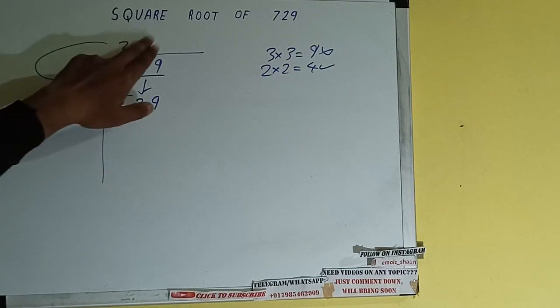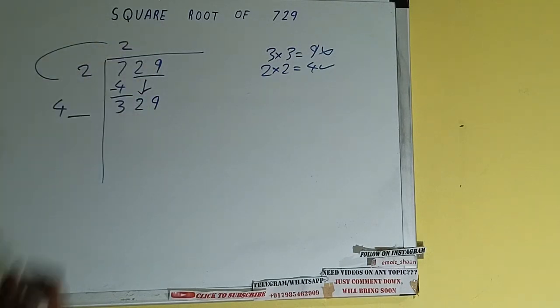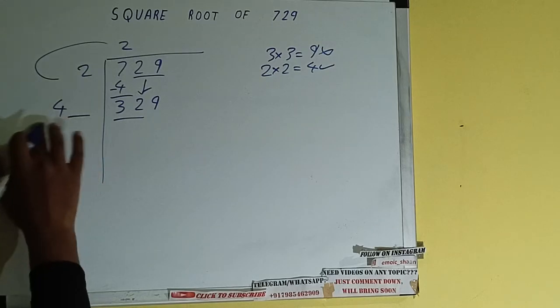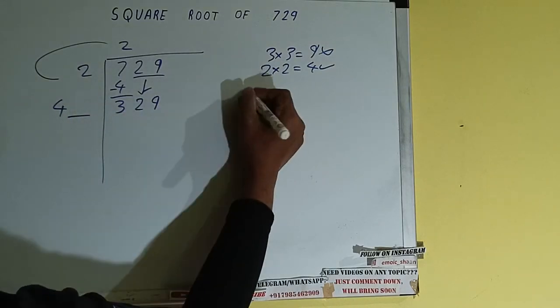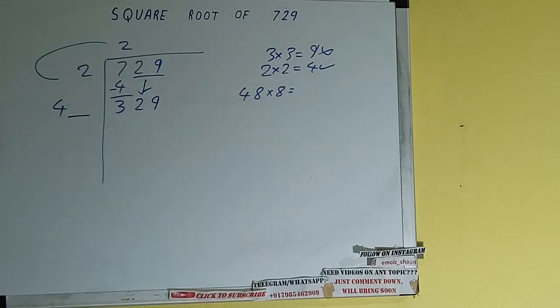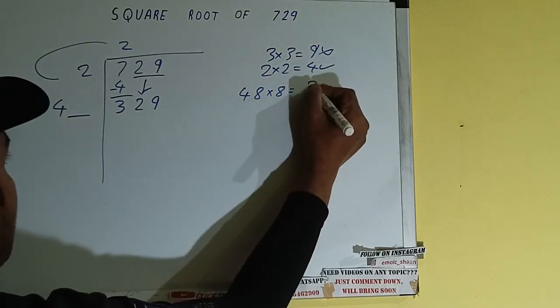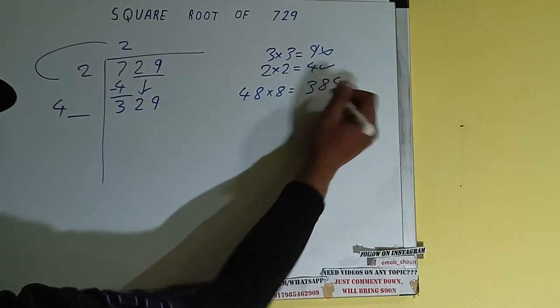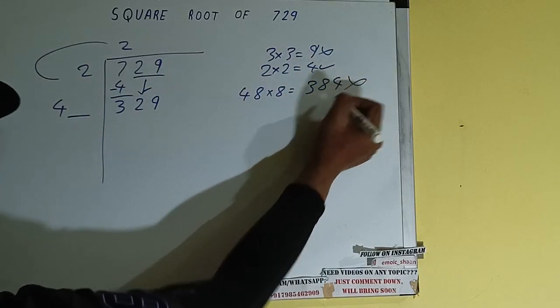Now whatever number we write here we have to write here also. So we can compare this 4 and 32. So 4 times 8 is 32, right? So we can try out 8 times. 48 into 8 we can try. It will be 384 which is bigger than this, so we cannot take it.